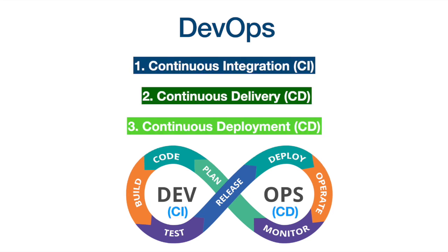DevOps defines three processes, also called pipelines: continuous integration, continuous delivery, and continuous deployment. When these processes or pipelines are implemented correctly, they can really improve and enhance the software development process and reduce time to production. Let us look at these processes or pipelines in detail.